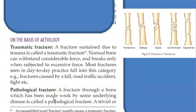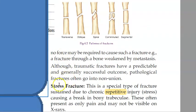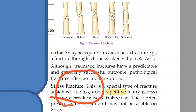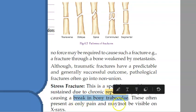Pathological fractures happen in conditions like osteoporosis, where your bones are very weak — especially in elderly women after menopause — and they just get fractured just like that. Then there is something called a stress fracture. A stress fracture is caused by repetitive injury, like always clicking on the mouse. That repetitive action leads to a stress fracture.